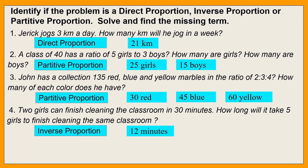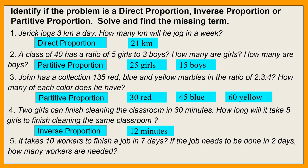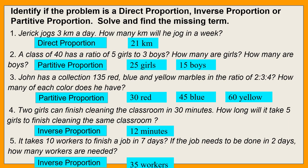It takes 10 workers to finish a job in 7 days. If the job needs to be done in 2 days, how many workers are needed? This is an inverse proportion, and the answer is 35 workers.